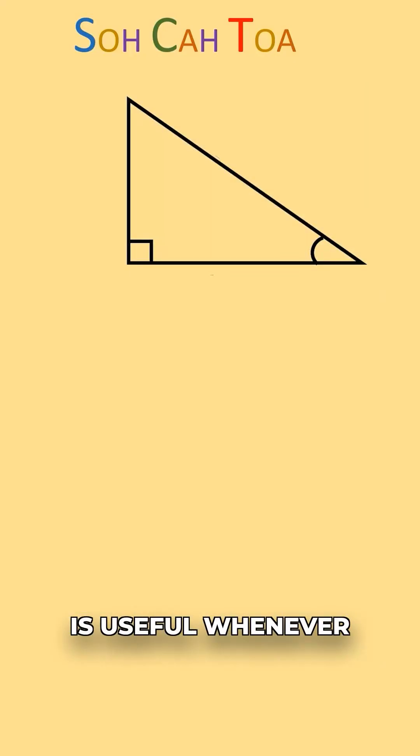And Sokotoa is useful whenever we're working with an angle of a right triangle that's not the 90 degree angle. So it's either going to be this angle down here in this corner or this angle up at the top here.